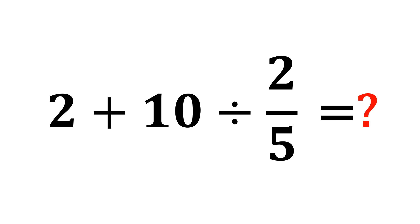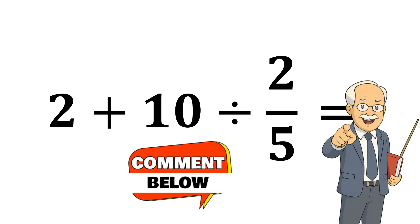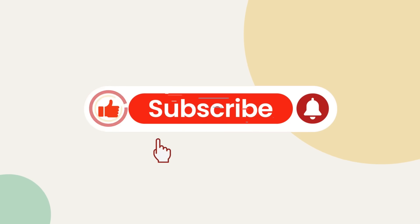Now it's your turn. Here's the final challenge: 2 plus 10 divided by 2/5. Looks easy, right? When you've got your answer, drop it in the comments below. Let's see who's actually paying attention and remembers the two golden rules. If you enjoyed this breakdown, hit that like button and subscribe for more quick math puzzles like this. Thanks for watching.